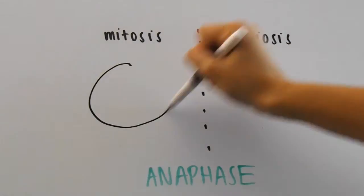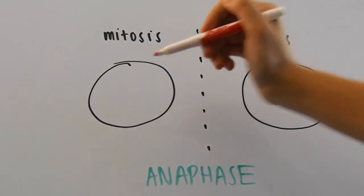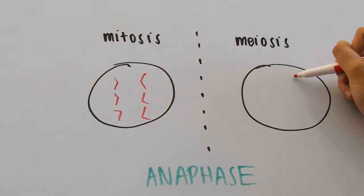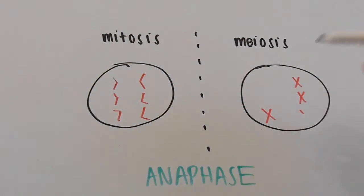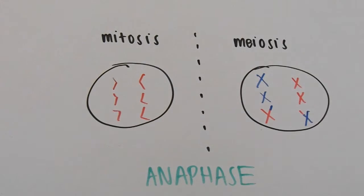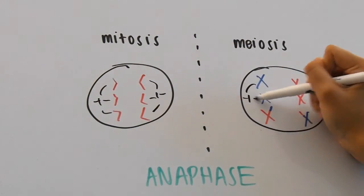Now at anaphase, it's clear that the sister chromatids are being pulled apart in mitosis, but they're staying together in meiosis. It's the homologous chromosomes that are being pulled apart, not the sister chromatids.